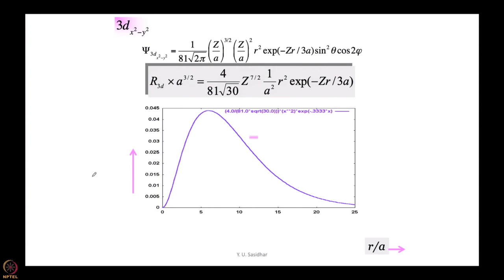These others that we are talking about now are actually generated by appropriate linear combination of m equal to plus minus 1 orbitals and m equal to plus minus 2 orbitals. I leave it to you to figure out which ones are generated by taking linear combination of m equal to plus 1 and minus 1 orbitals, which ones are generated from m equal to plus and minus 2 orbitals.